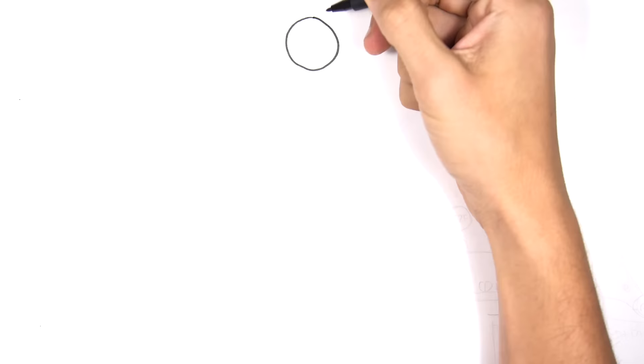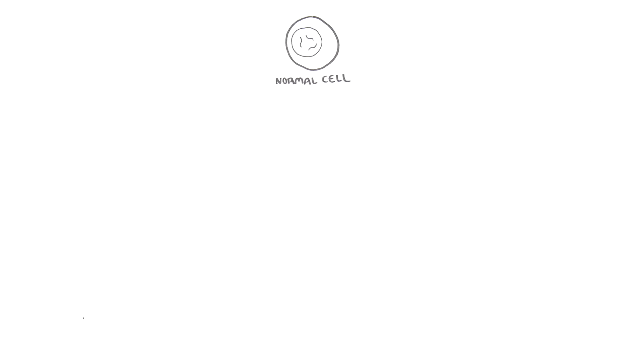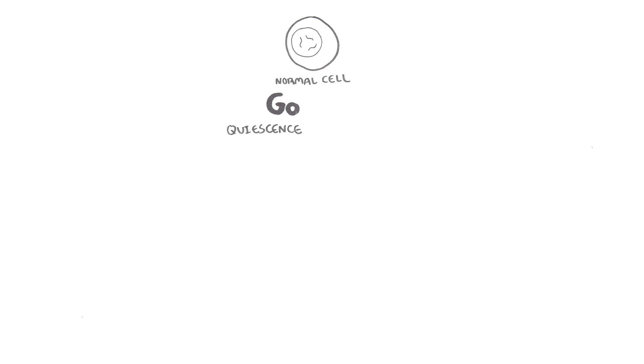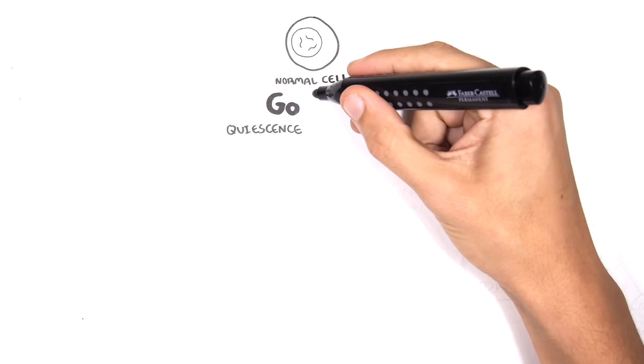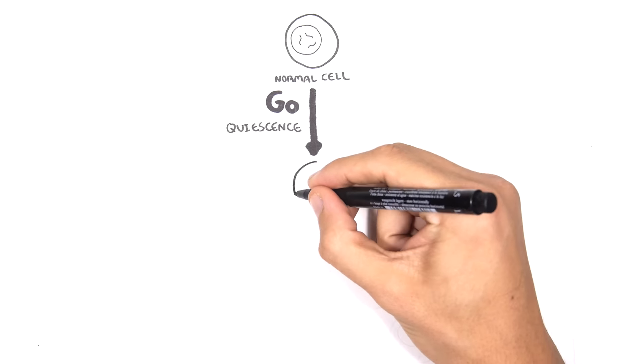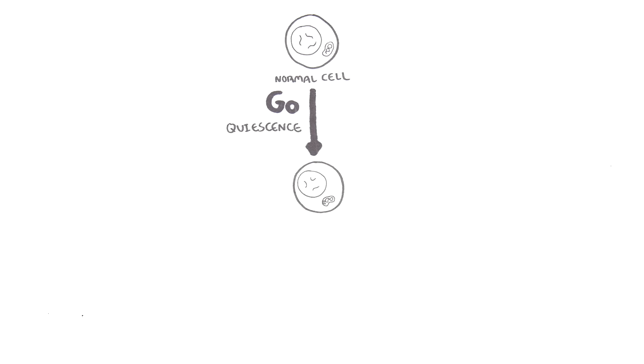Hello, in this video we're going to talk about oncogenetics, the mechanism of cancer from a gene point of view. In order to understand this we have to learn again about the cell cycle. A normal cell can just be at rest — this is the quiescent phase, the G0 phase.